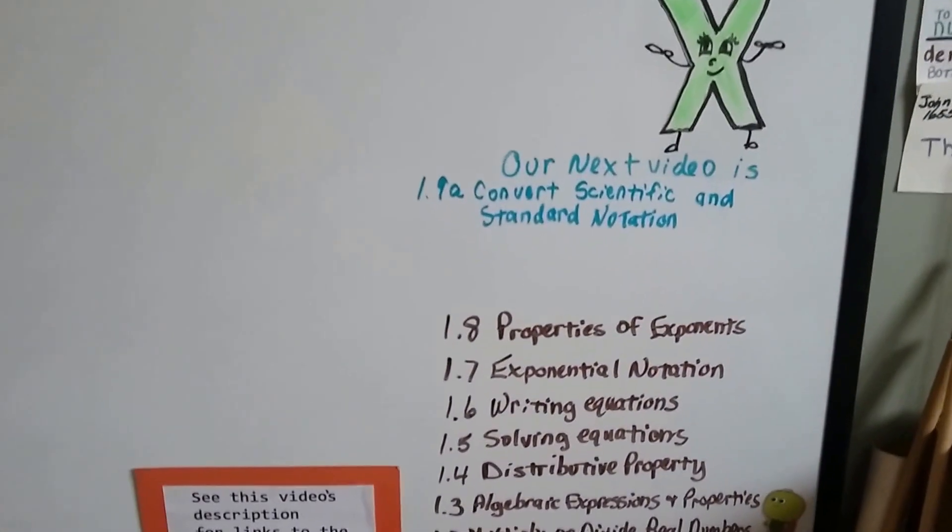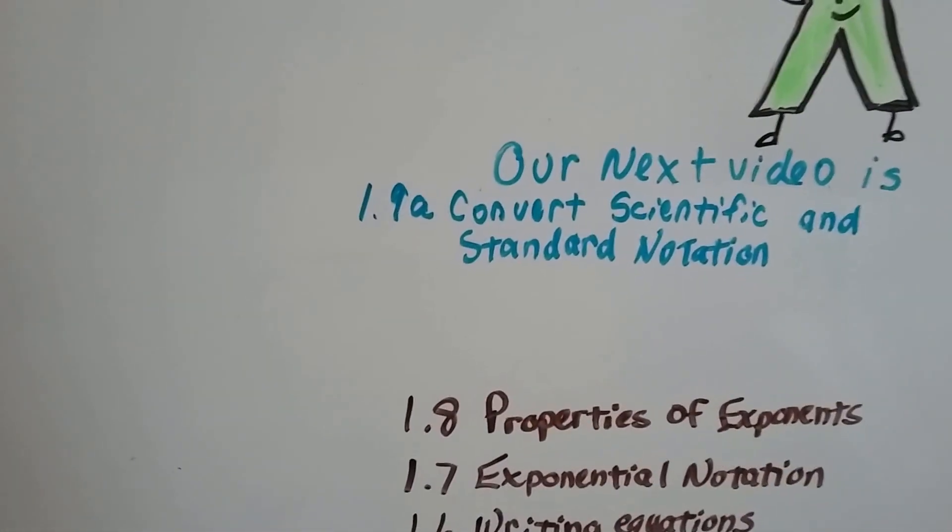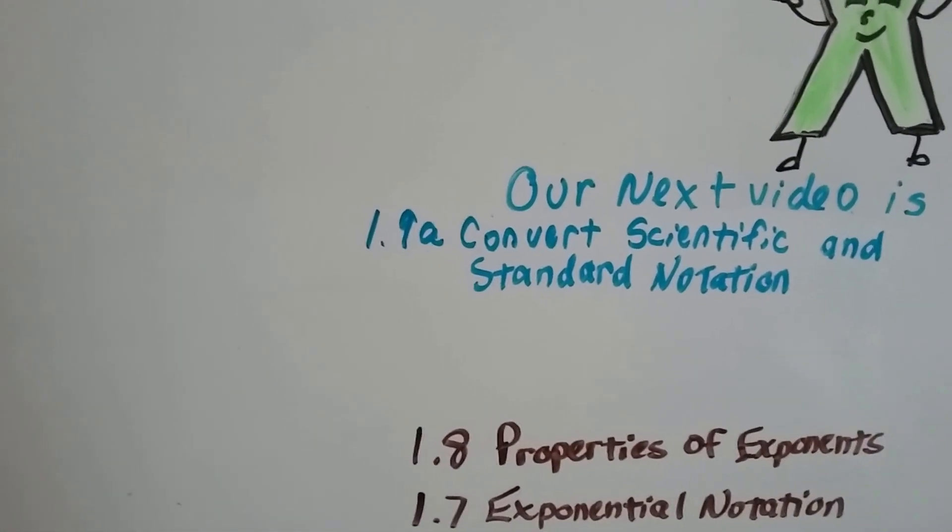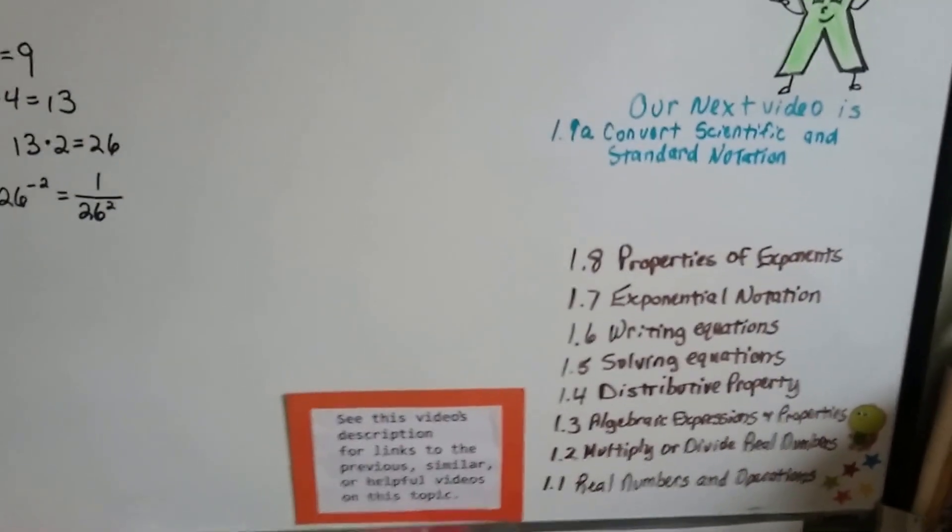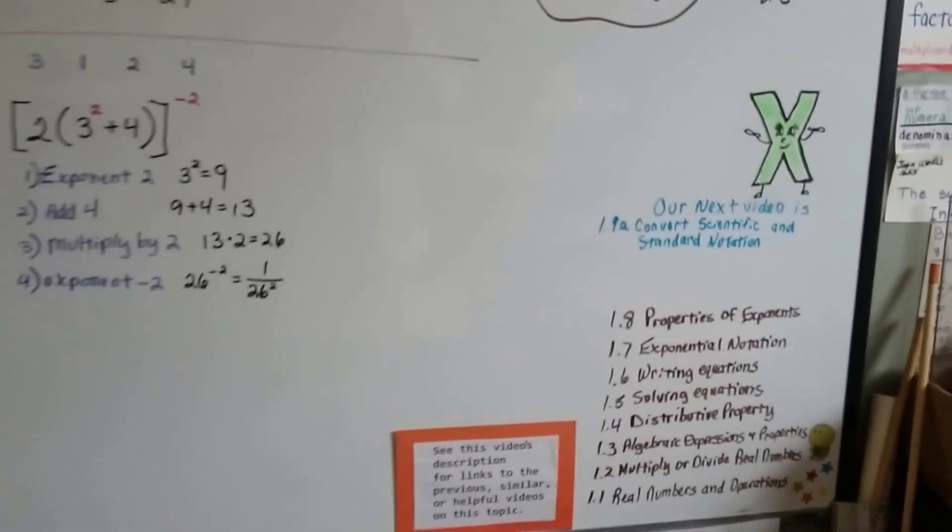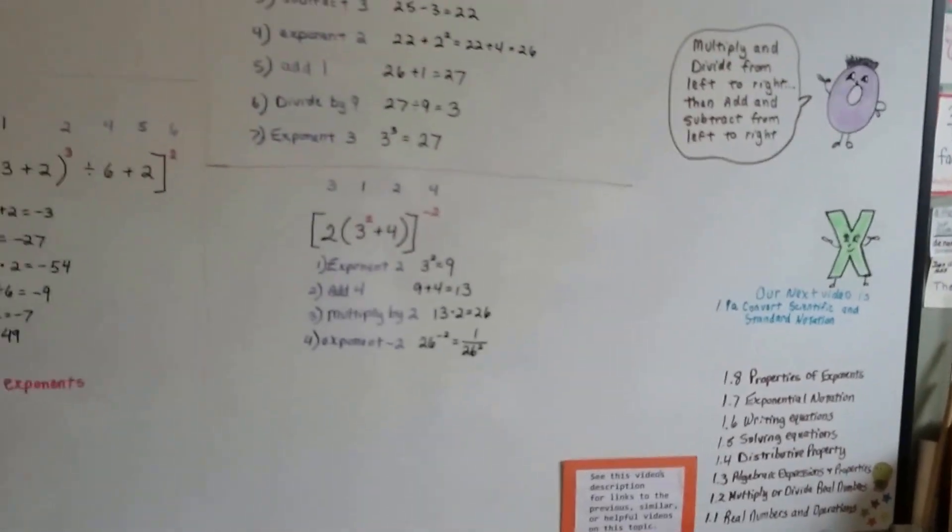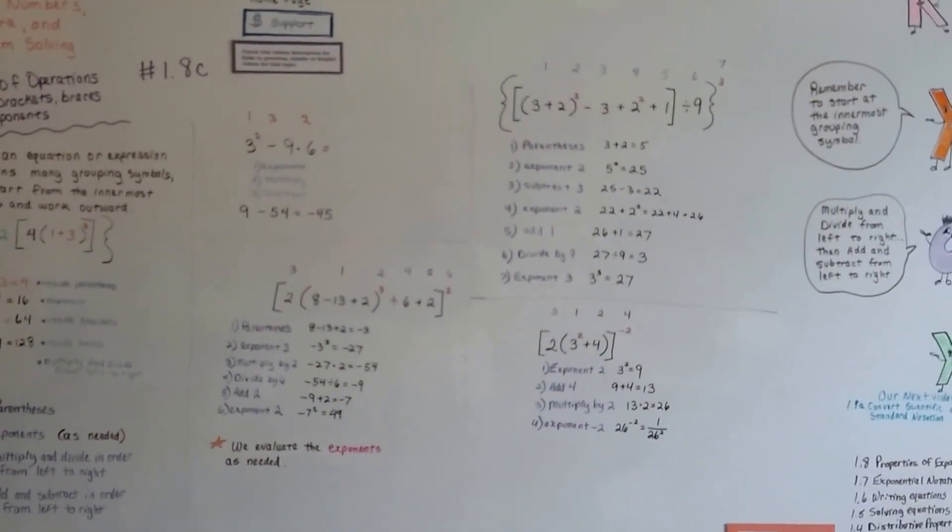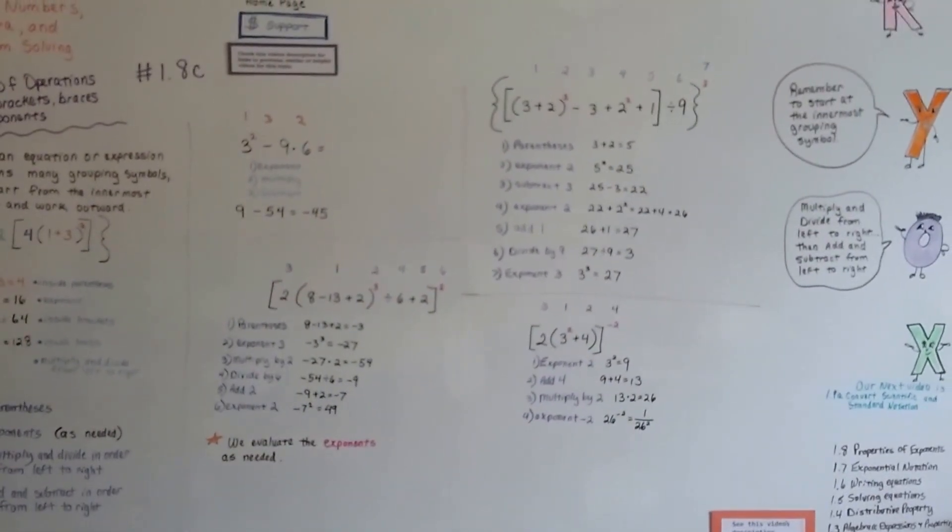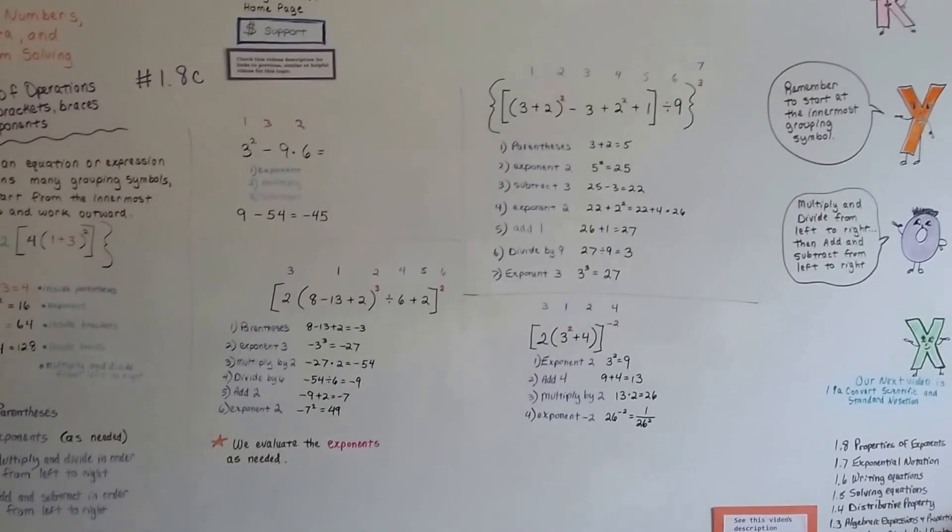Our next video is 1.9a, and we're going to talk about converting between scientific and standard notation. And if you want to see any of the previous videos we've made for Chapter 1 so far, for this Algebra 2 playlist, all you have to do is click on the description of this video, and it'll take you right to them. Great review for a chapter test. I'll see you next video.